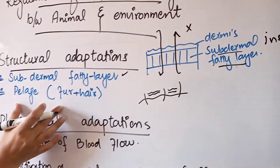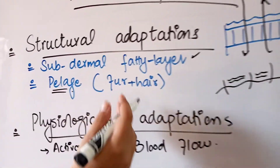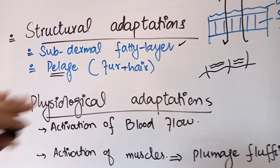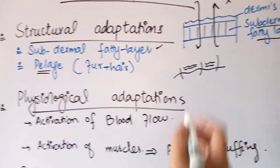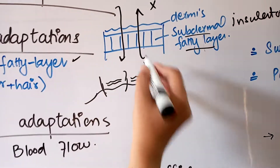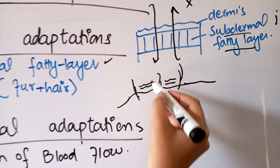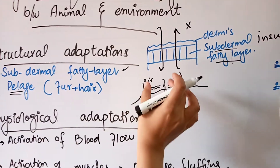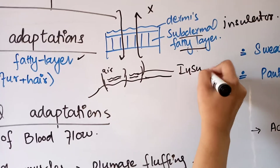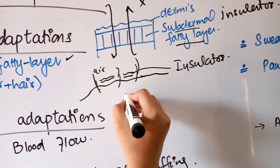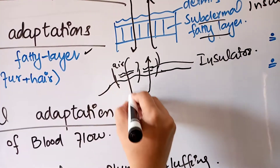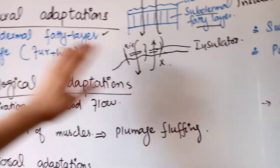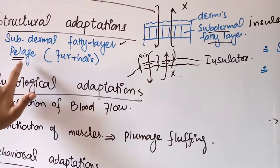The next structural adaptation is the fur or hair on the animal body. The fur traps air inside it, and when air is trapped, it works as an insulator — it prevents heat from escaping the body or entering from outside. So both the sub-dermal fatty layer and the fur work as insulators.